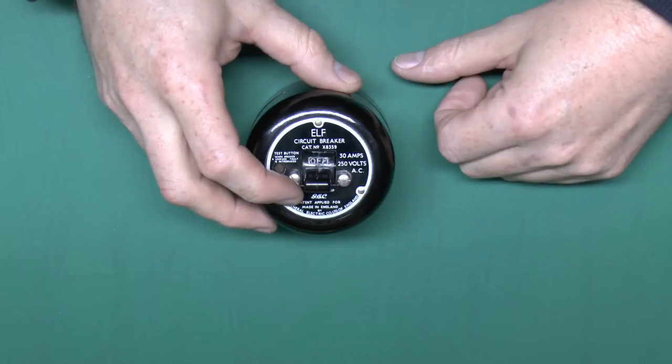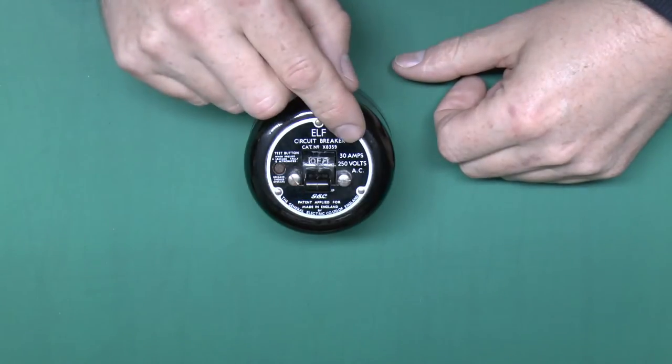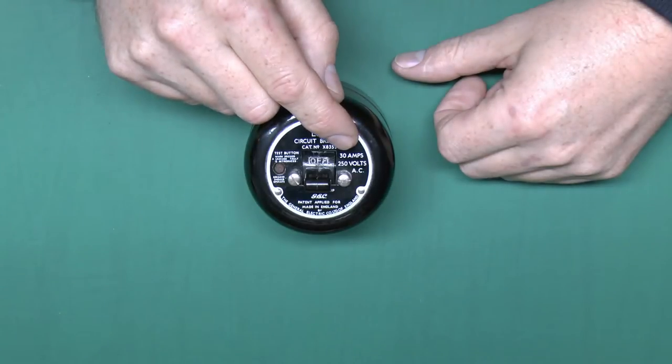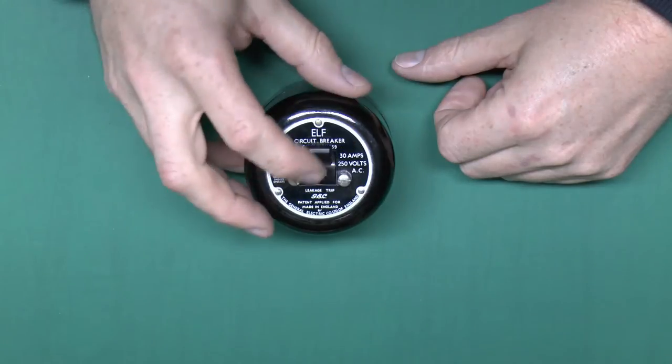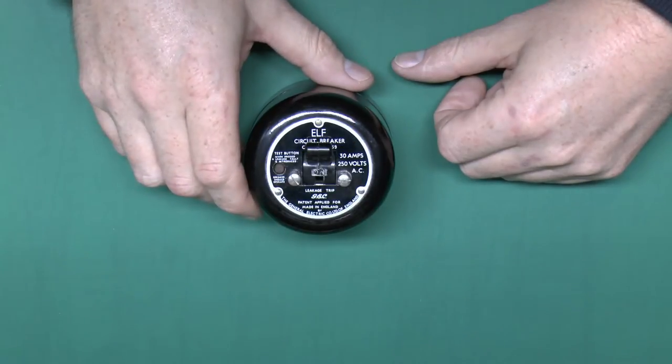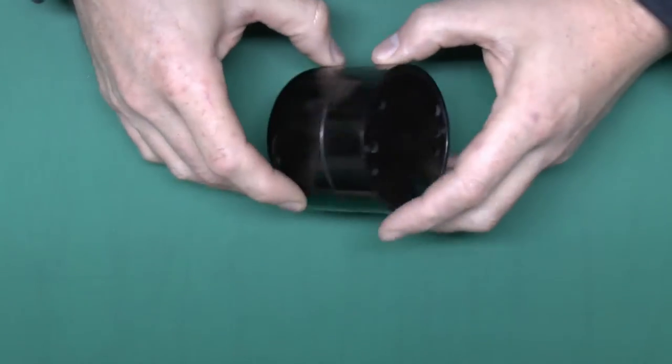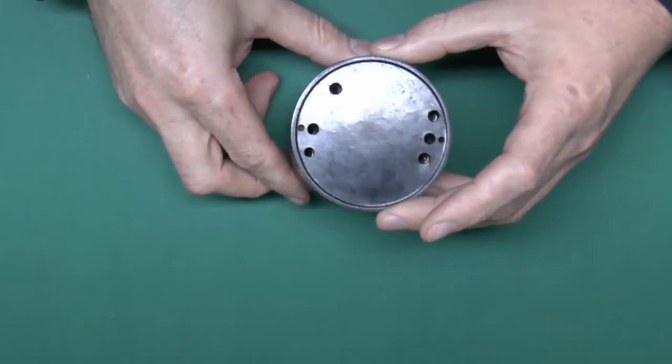Now this particular one is considerably older than those Crabtree and Chilton types shown before. There's no date on the thing but it's only rated to 30 amps which these days is a pretty feeble type of supply for a property. The whole styling of it is obviously from many decades ago. So this one appears to have never been used as it's totally undamaged. There's no holes for wiring to enter anywhere.